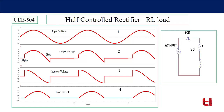This happens because some amount of energy remains stored in the inductor, and the inductor will continue to discharge until it gets a condition to discharge. That will occur until the net voltage — inductor voltage minus source voltage — equals some positive value. During this positive voltage duration, the thyristor will continue to conduct, and the extra current we are getting from pi to beta.